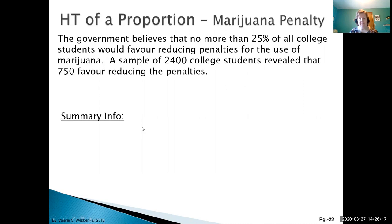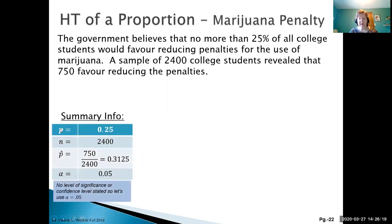First, the population value P is 25%, and that's what the government believes. We took a sample of 2,400 students, and 750 favored reducing the penalties. So our sample proportion is 750 over 2,400. Notice how we don't have two percentages—we have a percentage and a ratio, and that ratio came out to 31.5%.